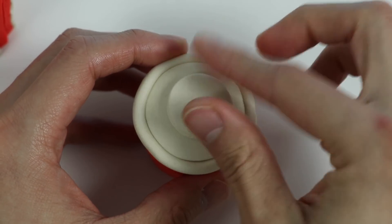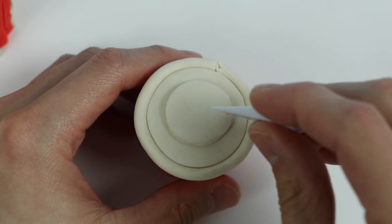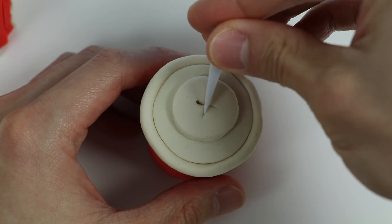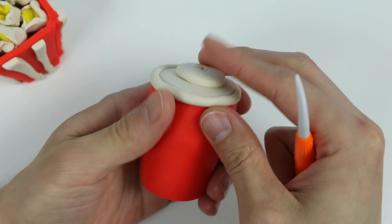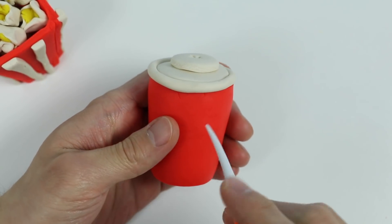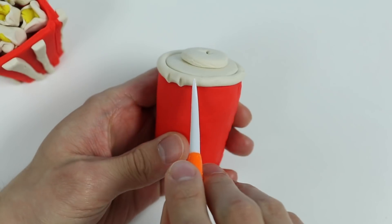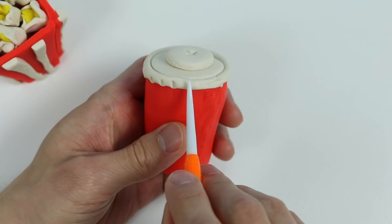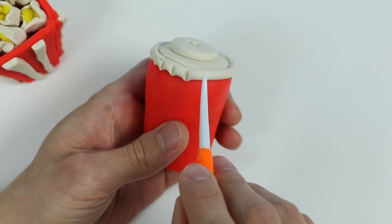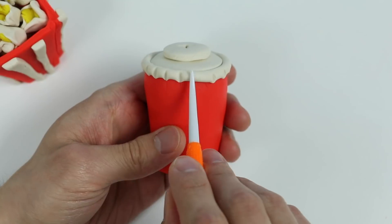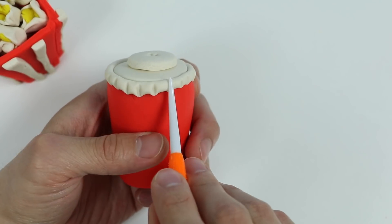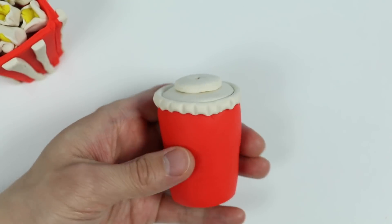This will be the part where the straw can enter. Let's make a little X mark. There we go! Now let's use this tool to add some final details. Awesome! Here's our Play-Doh soda.